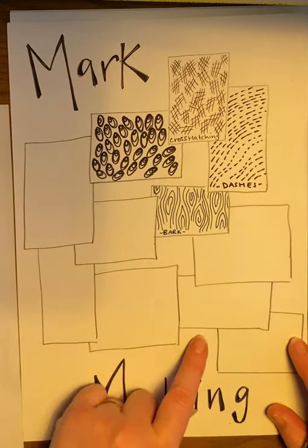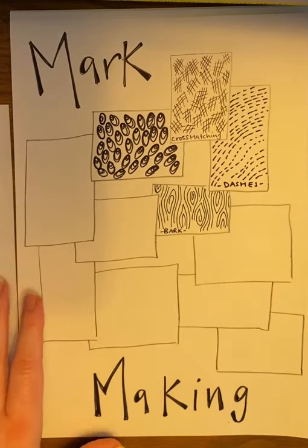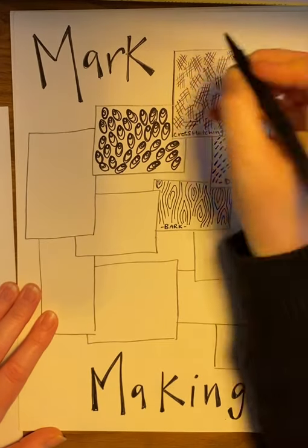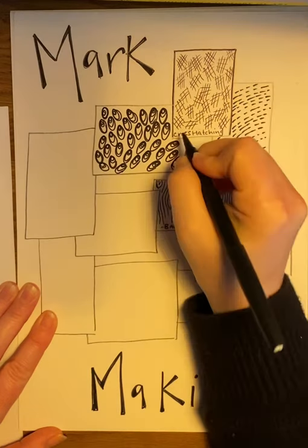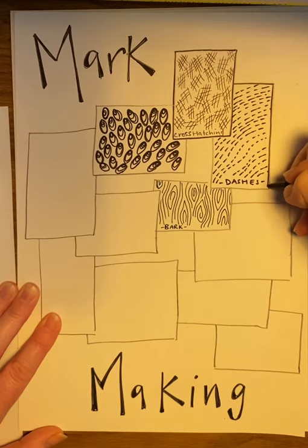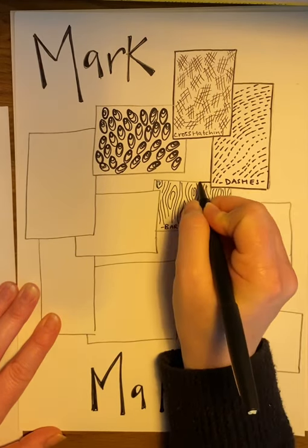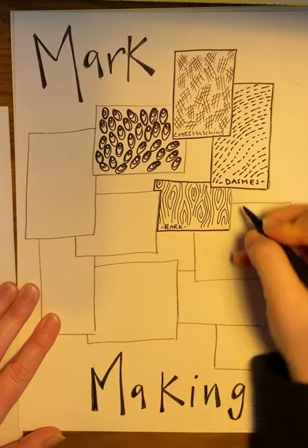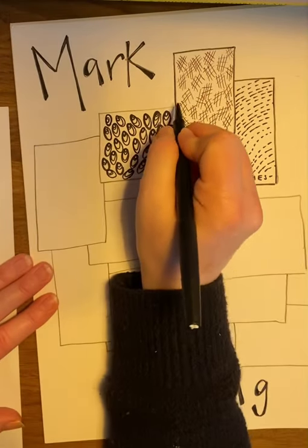Now you're going to fill each of these boxes with your different types of mark making. Once you've done that, what I would like you then to do is just go over your boxes with your black pen. So even if you did it in pencil, it would be really nice just to make sure it's really bold and it just really stands out, and it's a nice kind of composition, a really nice page and stands out kind of different mark making techniques.